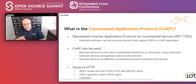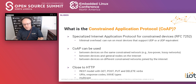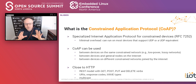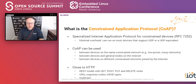Before we dig deeper into lightweight M2M, it's really important to understand what CoAP is about, since lightweight M2M builds on CoAP. CoAP is a specialized protocol defined in RFC 7252. Its greatest characteristic is that it has a minimal overhead — any device that supports UDP, or something equivalent like SMS, will be able to support CoAP. The typical header for a CoAP frame is around 100 bytes, which is very small compared to many protocols found in the typical data center.